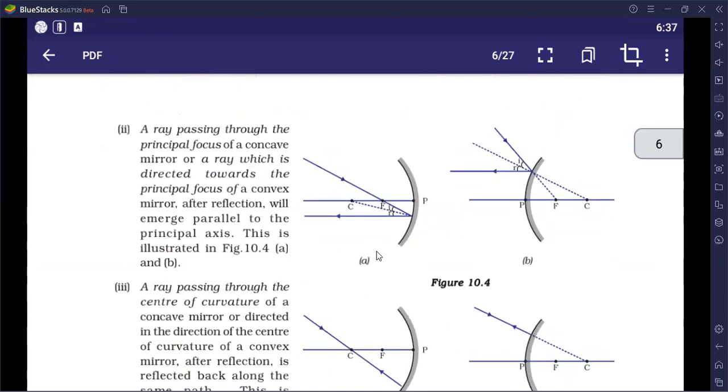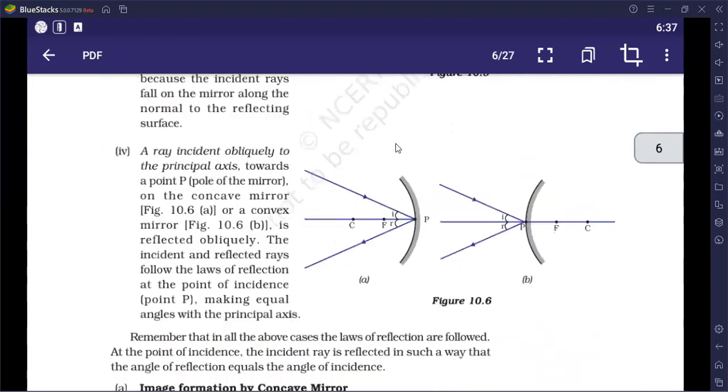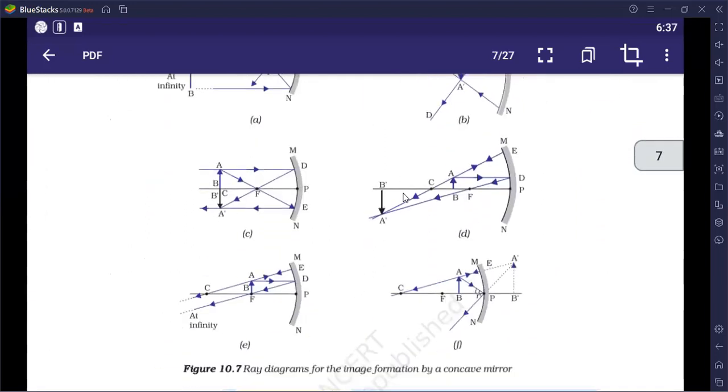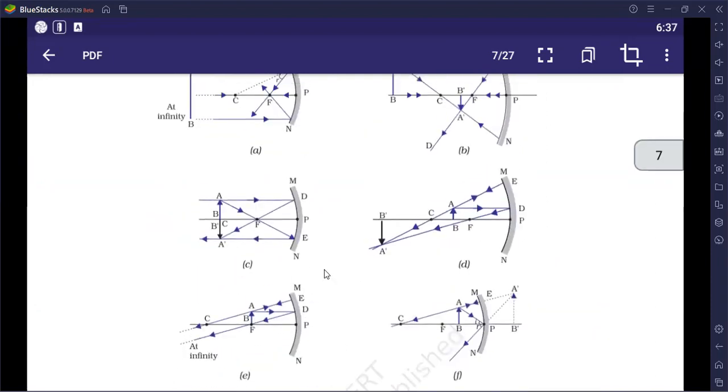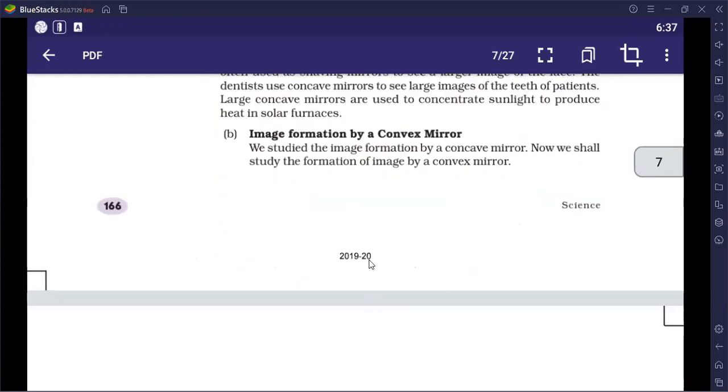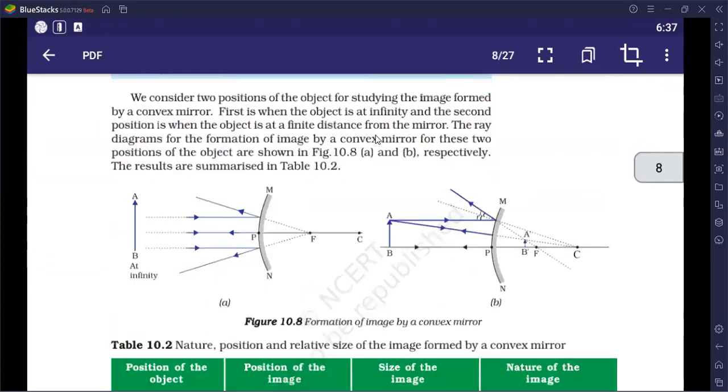Ray diagrams, I hope you will have practiced. The rules need to be very clear in the previous video. These are the ray diagrams, three marks can come. They will give you the position of the object. You have to work out everything else.